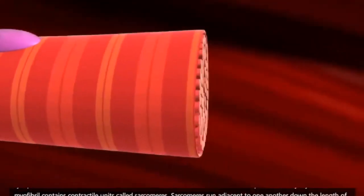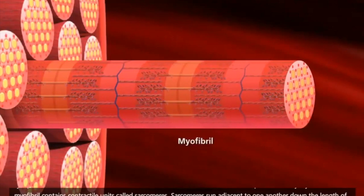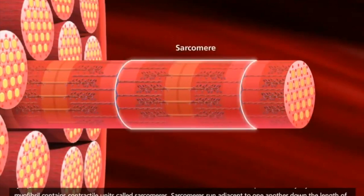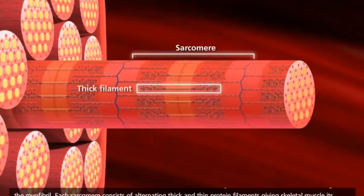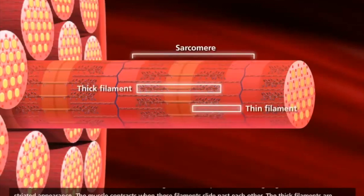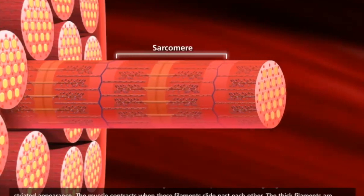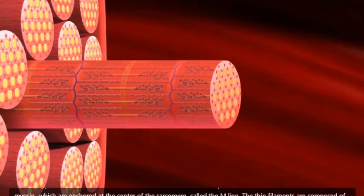Muscle fibers are composed of many myofibrils. A myofibril contains contractile units called sarcomeres. Sarcomeres run adjacent to one another down the length of the myofibril. Each sarcomere consists of alternating thick and thin protein filaments giving skeletal muscle its striated appearance. The muscle contracts when these filaments slide past each other.